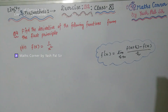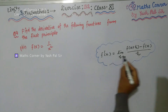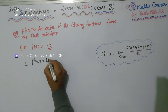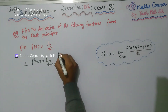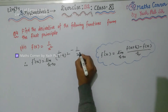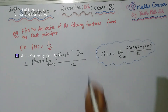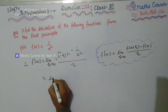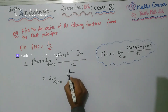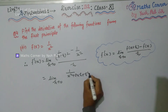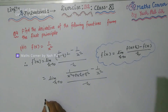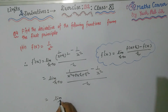Third part: f(x) = 1/x². By the first principle, f'(x) = limit h→0 of [1/(x+h)² − 1/x²] / h. Expanding (x+h)² = x² + 2xh + h², so f(x+h) = 1/(x² + 2xh + h²). Taking LCM of the numerator: [x² − (x² + 2xh + h²)] / [h(x² + 2xh + h²)·x²].